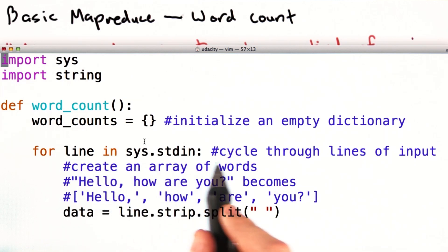We cycle through the lines of the input. And for each line, we create an array, data, which is essentially all of the words in that line, split by white space. So if we started with this line, hello, how are you? It would become hello, how, are, and you, in an array of length 4.